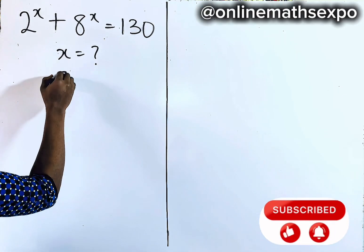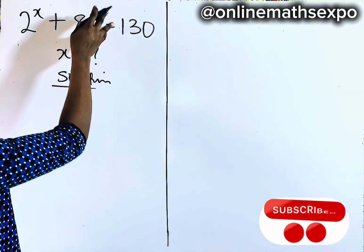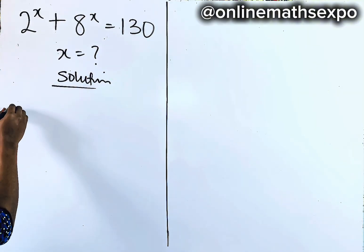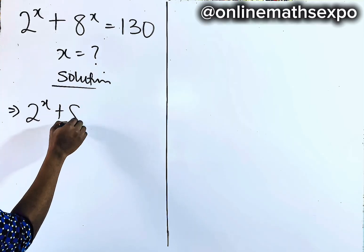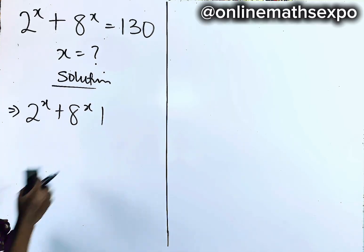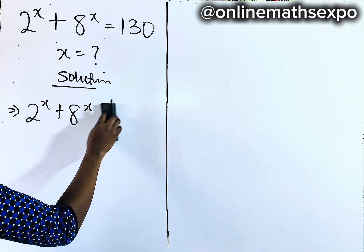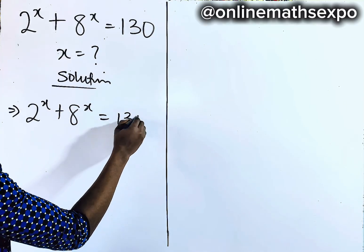We're going to begin with our solution. Here is the equation we have: 2 to the power of x plus 8 to the power of x is equal to 130.